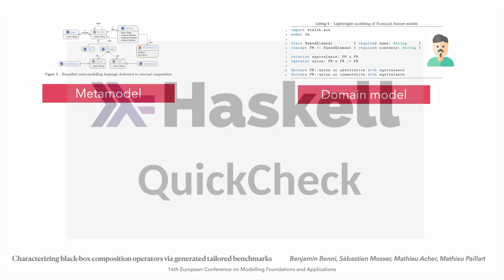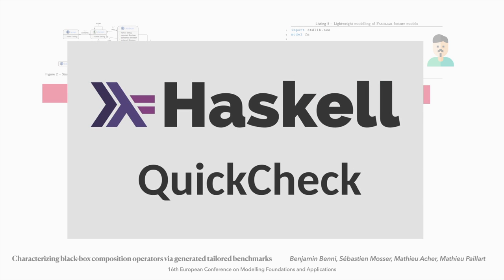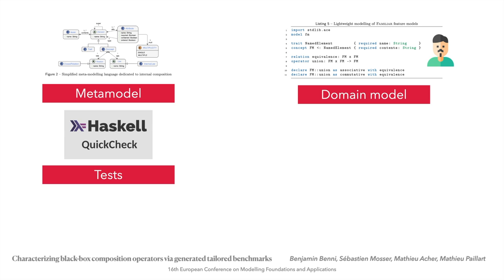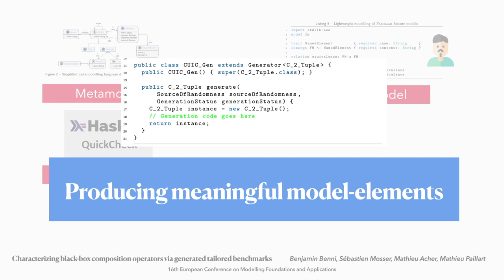First, we will generate a set of QuickCheck tests that will test if the given property holds on the targeted operator. But for this approach to work, we need to have a lot of various model elements at our disposal. These model elements are not random — in our example, you cannot merge any random feature models. The elements must be meaningful for the operator and the test. This is why we rely here on a user-based generation of model elements. The user provides the model elements; they can be generated or they can be provided as is.